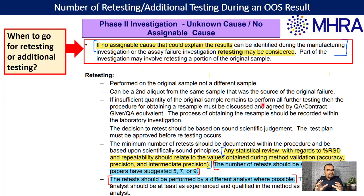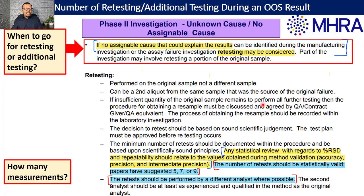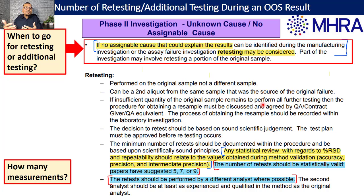The guidance says that if you are not successful in identifying the root cause, the organization can decide to go for retesting, also called additional testing. Retesting is nothing but re-measurement — you make the same sample again with similar testing procedures for more preparations and try to understand whether the results are meeting the specification or not.